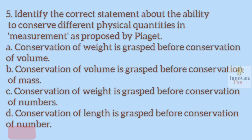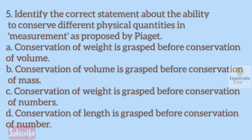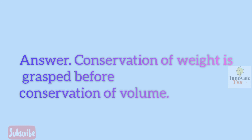Question 5. Identify the correct statement about the ability to conserve different physical quantities in measurement as proposed by Piaget. A. Conservation of weight is grasped before conservation of volume. B. Conservation of volume is grasped before conservation of mass. C. Conservation of weight is grasped before conservation of numbers. D. Conservation of length is grasped before conservation of number. Answer: Conservation of weight is grasped before conservation of volume.